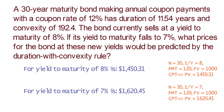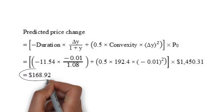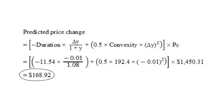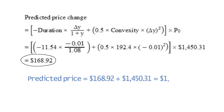Note that when yield decreases from 8% to 7%, the price of the bond increases to $1,620.45. Now, using the duration with convexity rule, assuming yield to maturity falls to 7%, the predicted price change would be $168.92. Therefore, the predicted price of the bond would be $168.92 plus $1,450.31 equals $1,619.23.